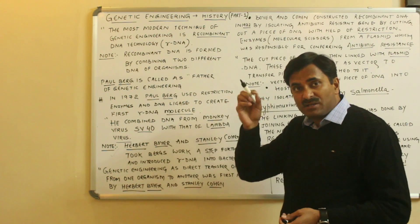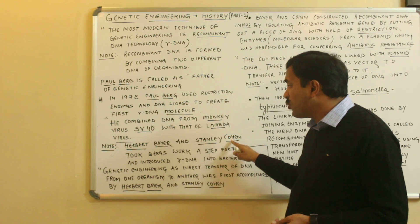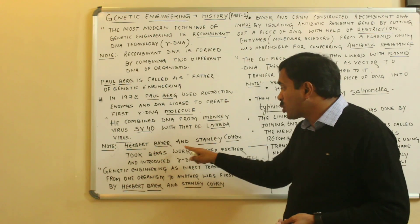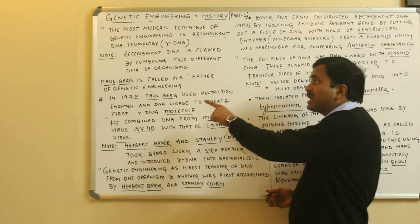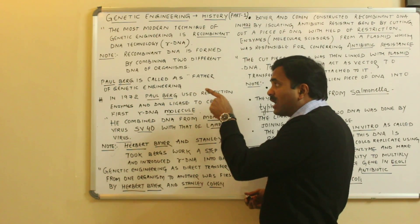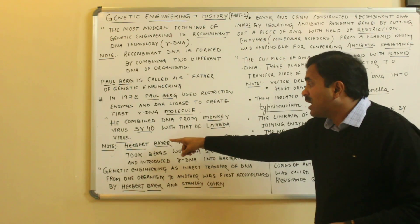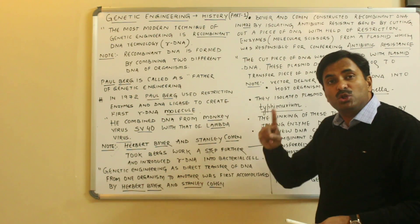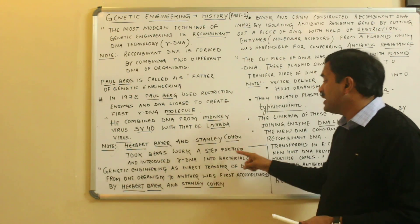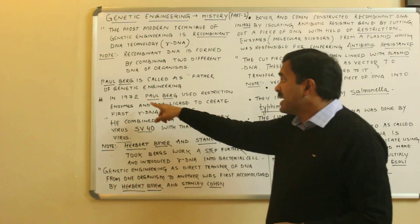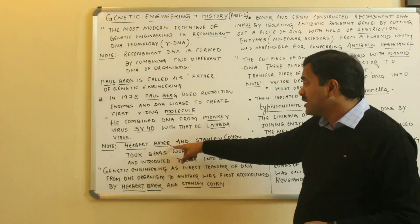Herbert Boyer and Stanley Cohen took Paul Berg's work a step further and introduced the recombinant DNA into a bacterial cell. So Paul Berg is associated with the construction of recombinant DNA, and Herbert Boyer and Stanley Cohen are also associated with the construction of recombinant DNA.